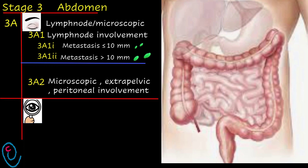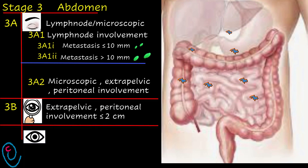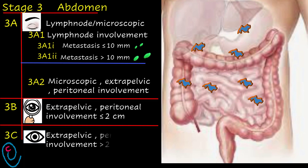When we can see small lesions, it becomes 3b. 3b is extra-pelvic peritoneal involvement of 2 centimeters or less. When the lesions become more than 2 centimeters, the stage becomes 3c.